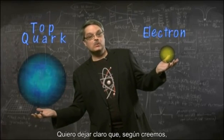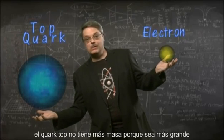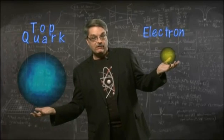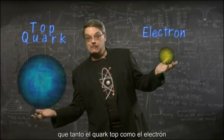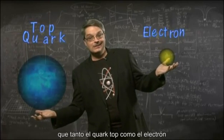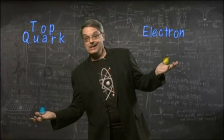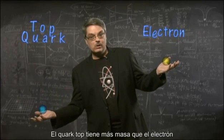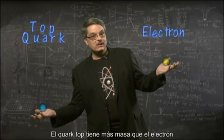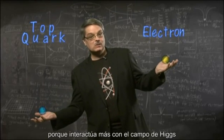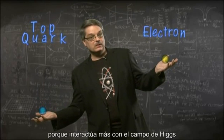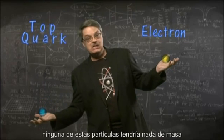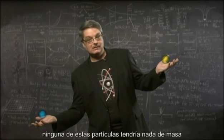I'd like to stress that we believe the top quark is not more massive because it's bigger — it's not. In fact, we believe that both the top quark and the electron are exactly the same size. Indeed, they both have zero size. The top quark is more massive than the electron simply because it interacts more with the Higgs field. Actually, if the Higgs field didn't exist, neither of these particles would have any mass at all.